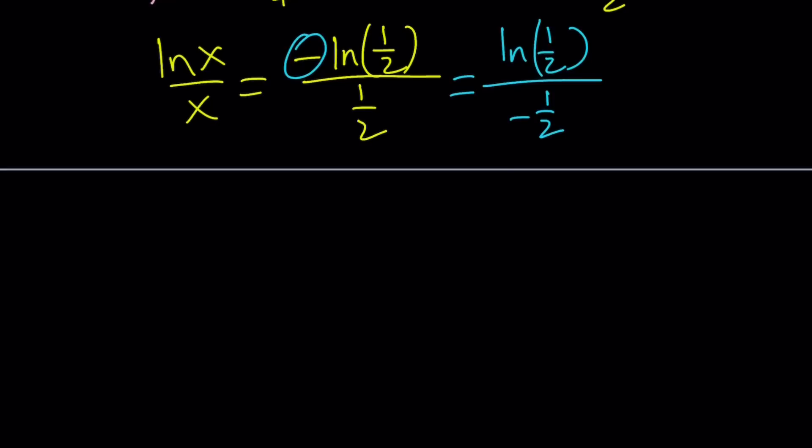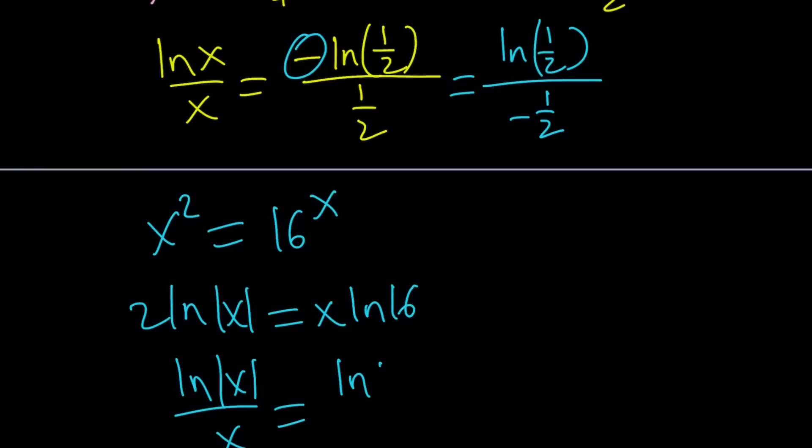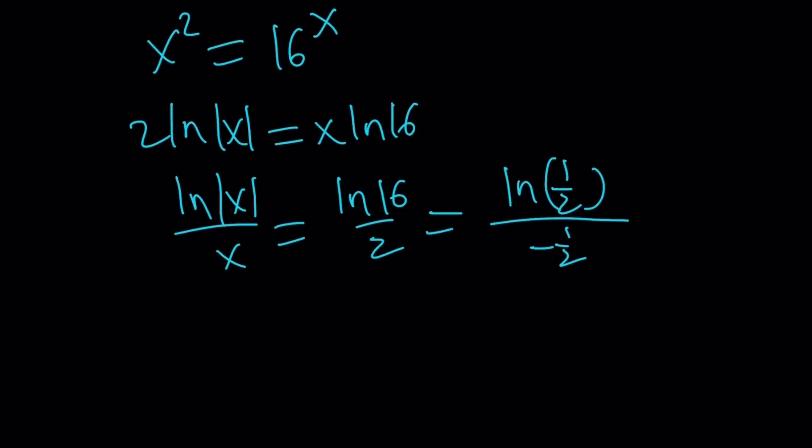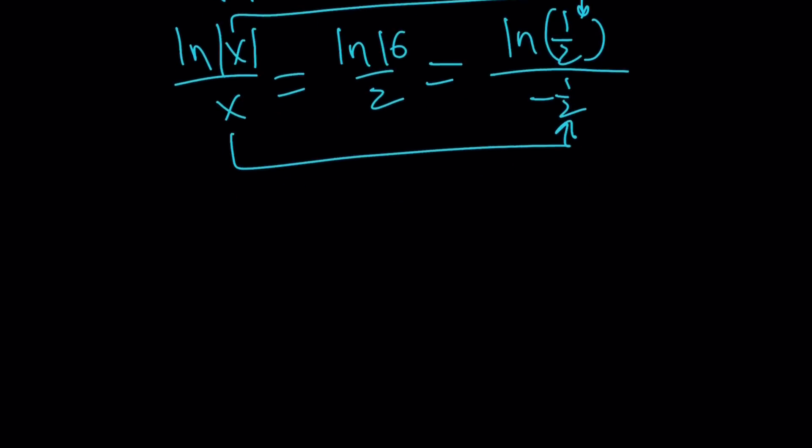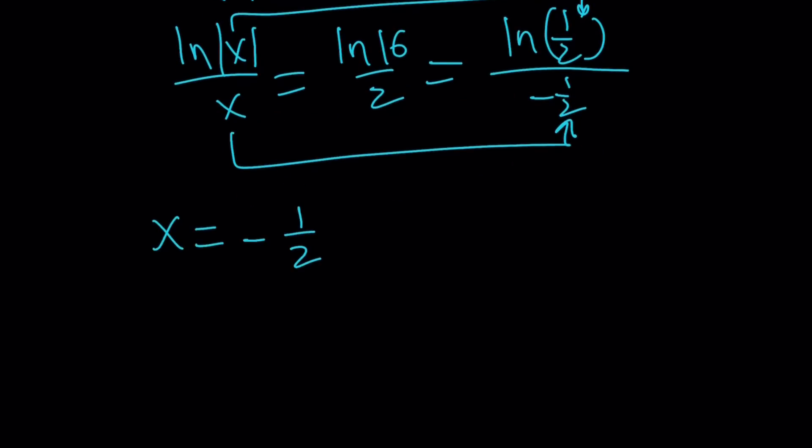So, having used the absolute value would give us the following. Let me quickly tell you. We would do 2 ln absolute value of x equals x ln 16. And then, we're going to get ln absolute value of x over x equals ln 16 over 2, which I showed to be equal to this number. Therefore, our x is going to be negative one half, and the absolute value will take care of the negative. Isn't that perfect? That's why math is awesome. That's why I love math. x equals negative one half works. Great.